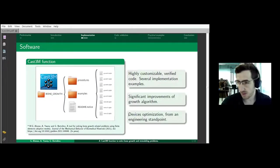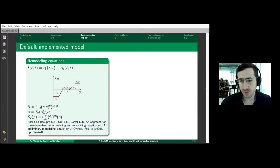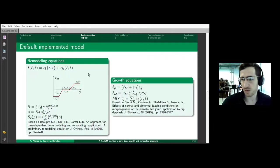I want to emphasize this: we did it to be able to optimize orthopedic devices from an engineering standpoint. We are not interested in the precise biology behind growth, but we want to have a good notion of what will happen with a particular device. So it is a general problem. We chose a set of well-accepted remodeling and bone growth equations.